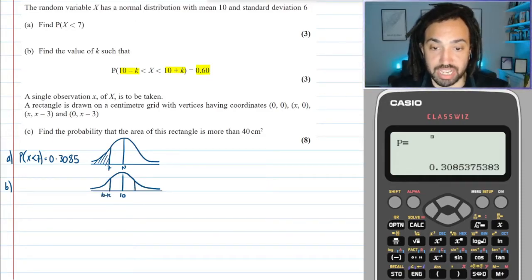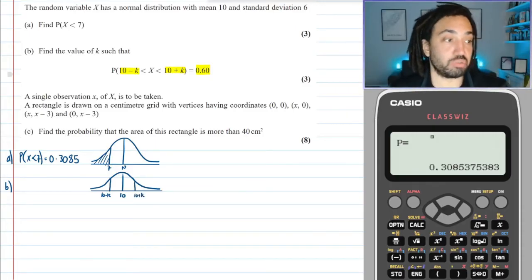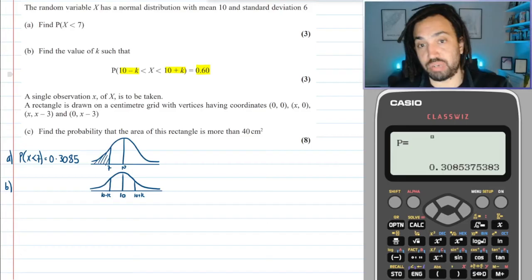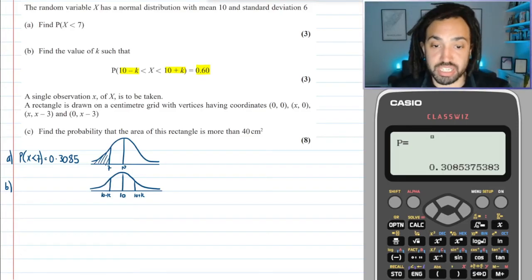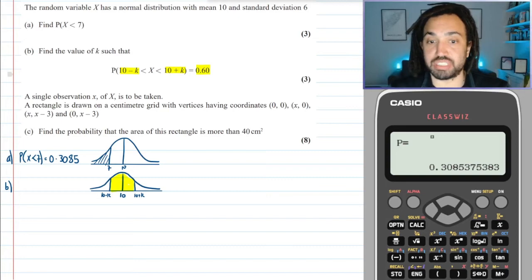So that means there must be some value of k which, if I take it away from 10, it will be on that side, and if I add 10 to it, it will be this side. It'll be symmetrical because we're either taking away k or adding on k from the middle mean part.